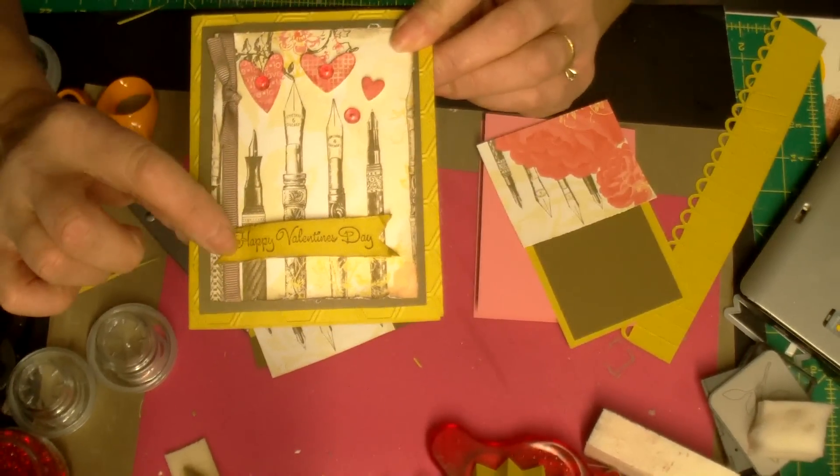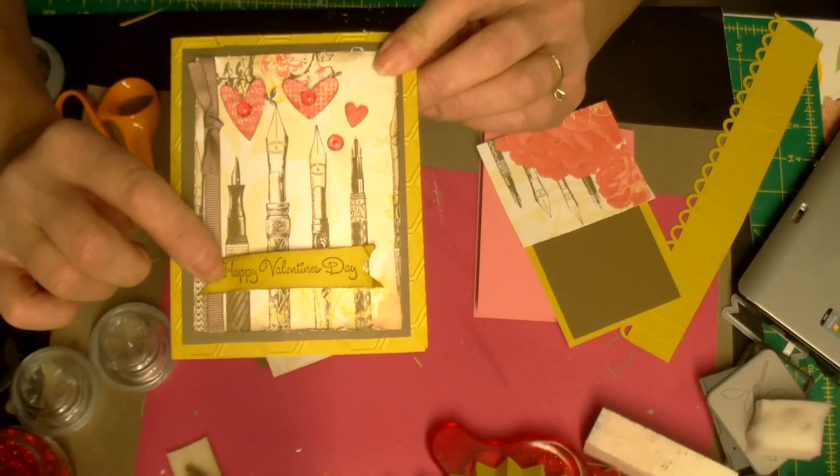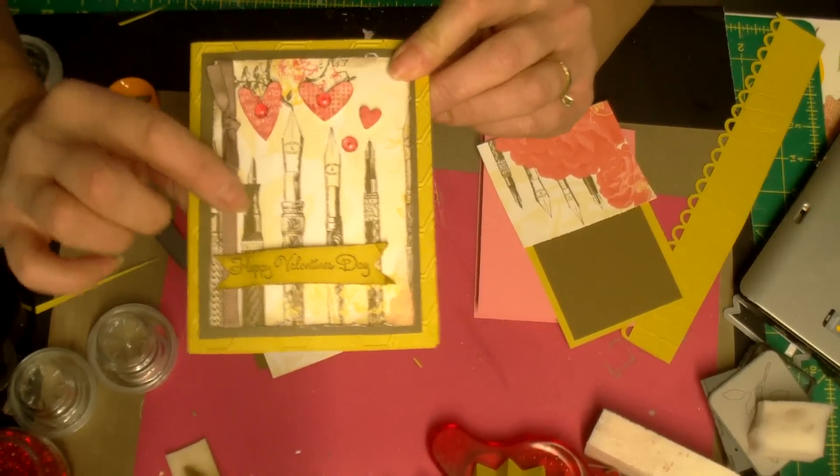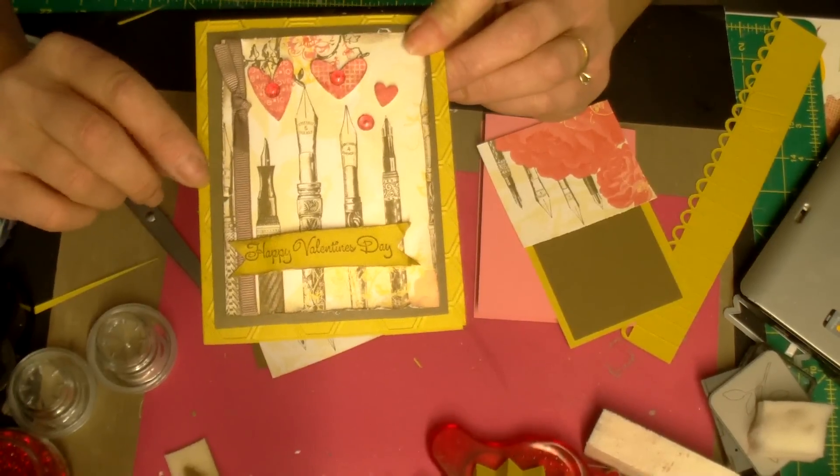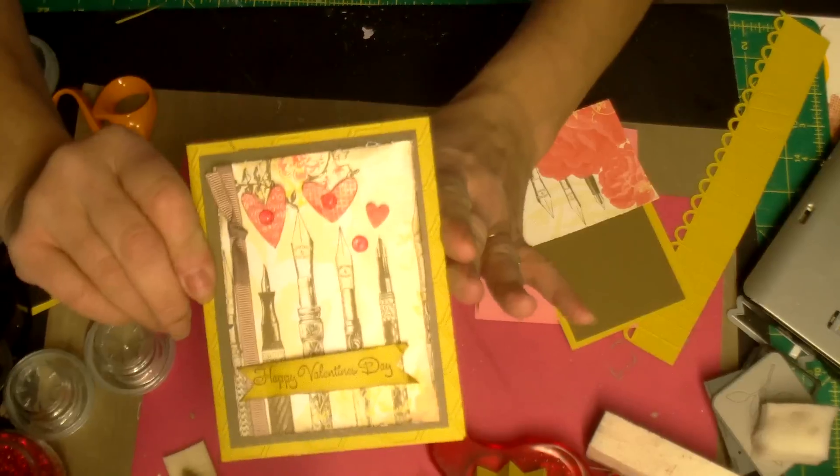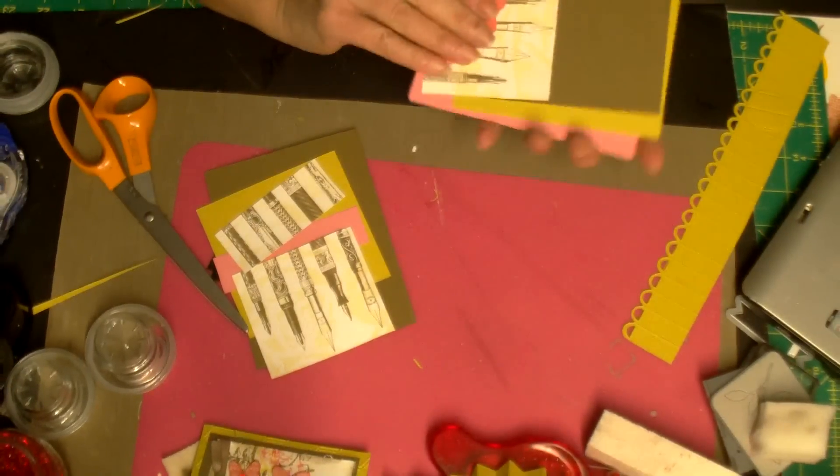And I just put a brown ribbon in there, and then Happy Valentine's is a stamp that I bought at Michaels for a dollar. And the ribbon here is the same color as the soft suede, so I was able to complete this card right here.